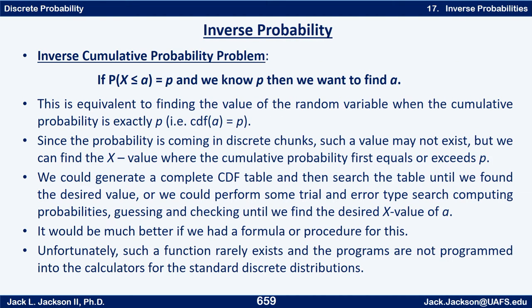The inverse cumulative probability problem we're dealing with in this section is: if the probability that a random variable X is less than or equal to A equals some known value P, can we find the value of A? This is equivalent to finding the value of the random variable when the cumulative probability is exactly P — that is, CDF(A) = P; we know P, find A.